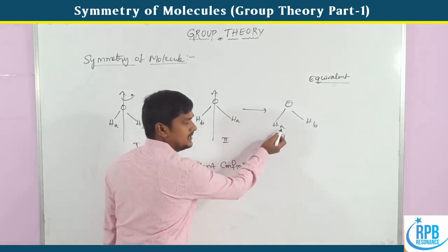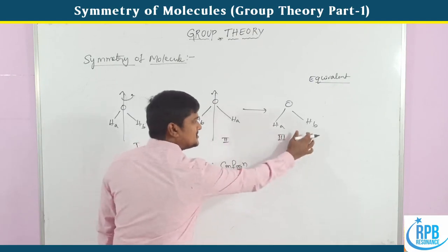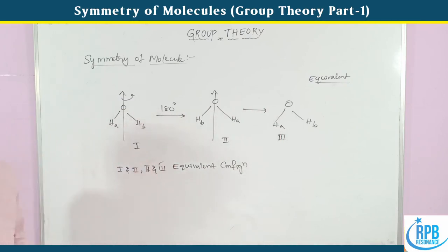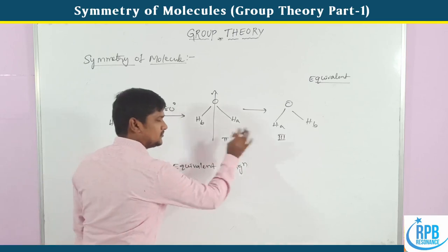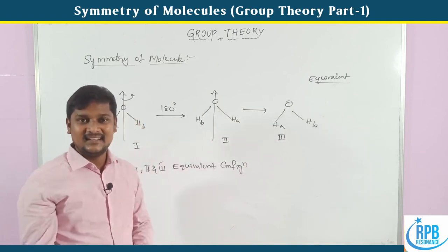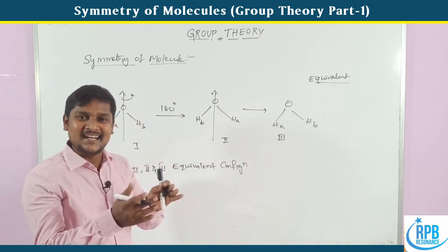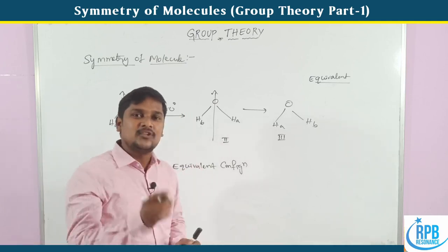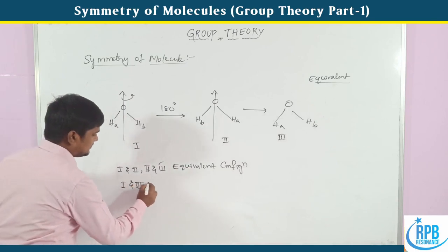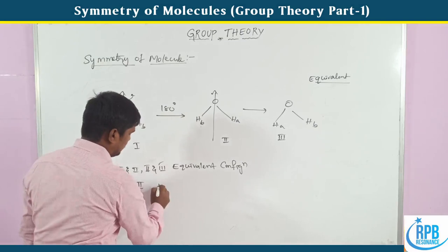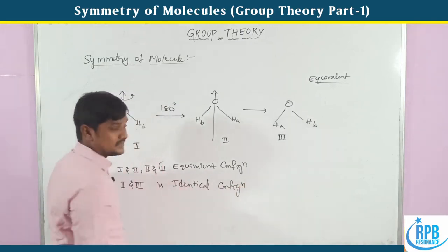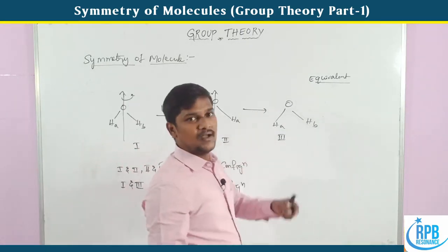Similarly, in configurations 2 and 3, HA replaces HB and HB replaces HA - so 2 and 3 are also equivalent configurations. Now for configurations 1 and 3: HA is on the left side and HB is on the right side in both - they are exactly equal. Those exact equal configurations are called identical configurations. So 1 and 3 are identical configurations. This is the simple definition regarding equivalent and identical configurations.